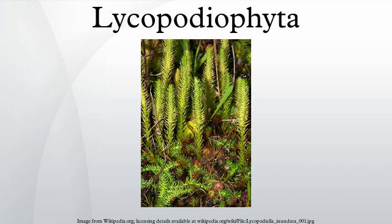There are around 1,200 living species of Lycopodiophyta, which are generally divided into three orders. In addition, there are extinct groups. There is some variation in how the extant orders are grouped into classes; they may be put into a single class.